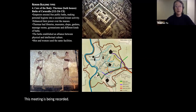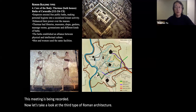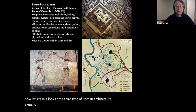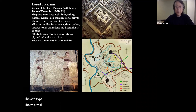Now let's take a look at the fourth type of Roman architecture — the thermae, that is the Roman bath.